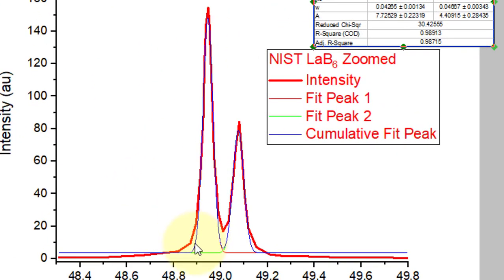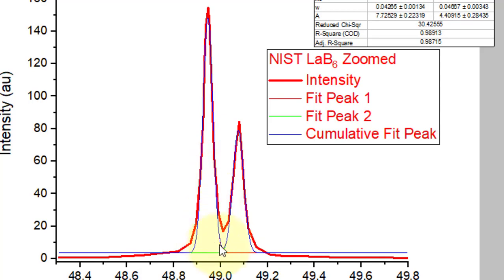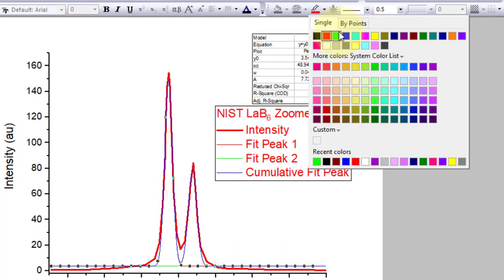First, check that both the peaks have been fitted well. Select the plots and ungroup. Now, change the size to see the overlapping peaks.